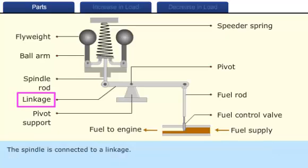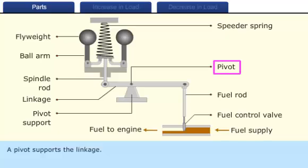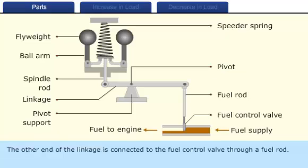The spindle is connected to a linkage. A pivot supports the linkage. The other end of the linkage is connected to the fuel control valve through a fuel rod.